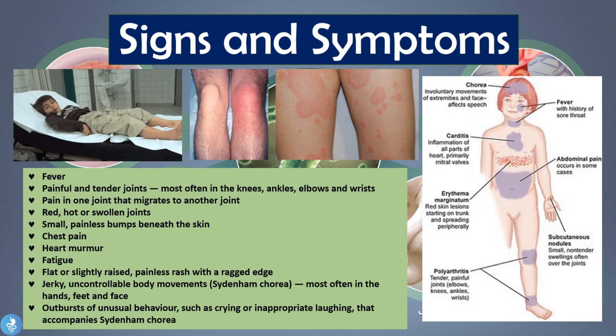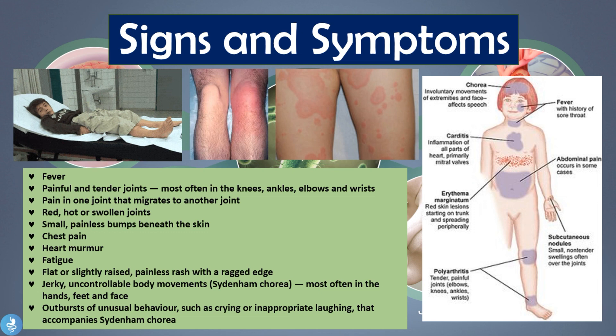Moving on to the diagnosis of this disease — according to the revised Jones criteria, a diagnosis of rheumatic fever can be made when two major criteria, or one major criterion plus two minor criteria, are present along with evidence of a streptococcal infection, such as elevated or rising anti-streptolysin O titer or DNase.